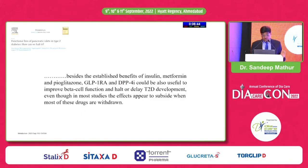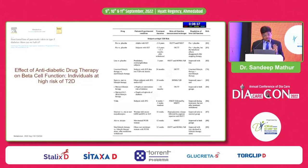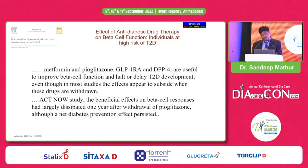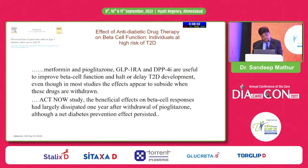Can deteriorative beta cell function be directly halted? Current therapies — metformin, pyoglitazone, GLP-1 receptor agonists, DPP-4 inhibitors — usefully improve beta cell function and can halt or delay type 2 diabetes development, even though most studies show effects subside when drugs are withdrawn. Saying GLP-1 enhances beta cell function because it enhances insulin secretion is wrong — it is a temporary phenomenon. You are taking more insulin out of the beta cell, putting more stress on it. Only ACT-NOW data has shown that beneficial effects of pyoglitazone on beta cell response persist — net diabetes prevention effect persists even after pyoglitazone withdrawal. So pyoglitazone and metformin are the only medicines whose effects persist after withdrawal, not incretin-based therapies.